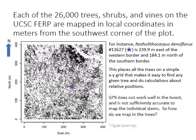We use the local coordinate system because GPS does not work well in the forest. And in any case, it is not usually accurate enough to reliably map all the individual stems. So, how do we do it? We use trigonometry. Let's take a look, remember some geometry and trigonometry, and get comfortable with the FERP mapping system.